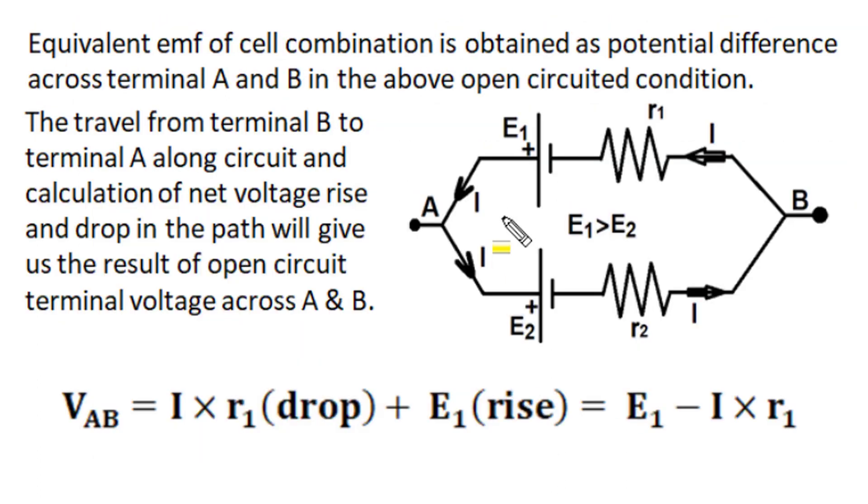The equivalent EMF of these two cell combinations connected in parallel is obtained as the potential difference across terminals A and B when this parallel combination of two cells is not supplying any current to the external circuit. But due to the difference in EMF of two cells, there exists a local loop current circulation I, and in that condition, we can find out the potential difference across terminals A and B.